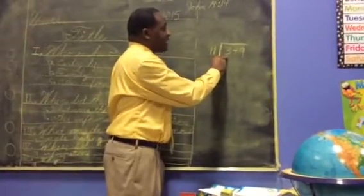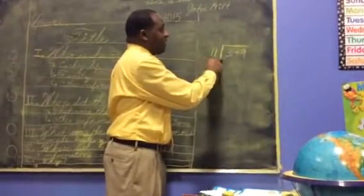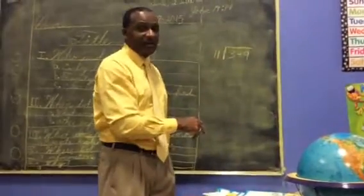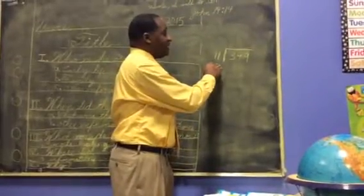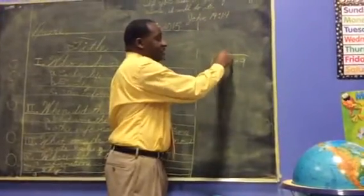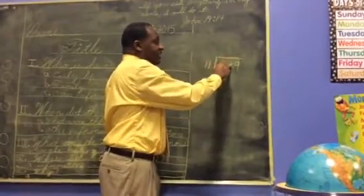We're going to start with the first column here. We're going to ask ourselves in the hundreds column, does 11 go into 3? And obviously it does not. So how many times can it go into 3? That would be 0. So we don't need to write a 0 up here. We can just skip to the next number.